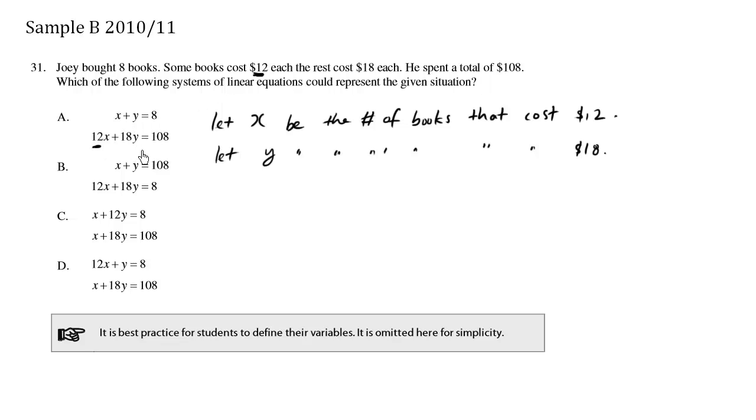And the same goes with $18. The actual price, the total money spent, which is $108, which is here, is depending on how many of these books we have as well as how many of those books we have. And of course, we need to multiply by the actual cost of each book. Here's the cost, and here's the number of books. So this equation also makes sense.